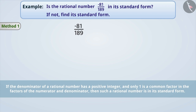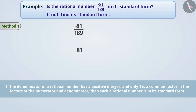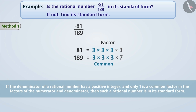We say that the denominator 189 of minus 81 by 189 is already a positive integer, so we do not have to multiply both the numerator and denominator by minus 1. If we express 81 and 189 as multiples of their factors, we see that all these factors are common factors. Therefore, minus 81 by 189 is not in its standard form.